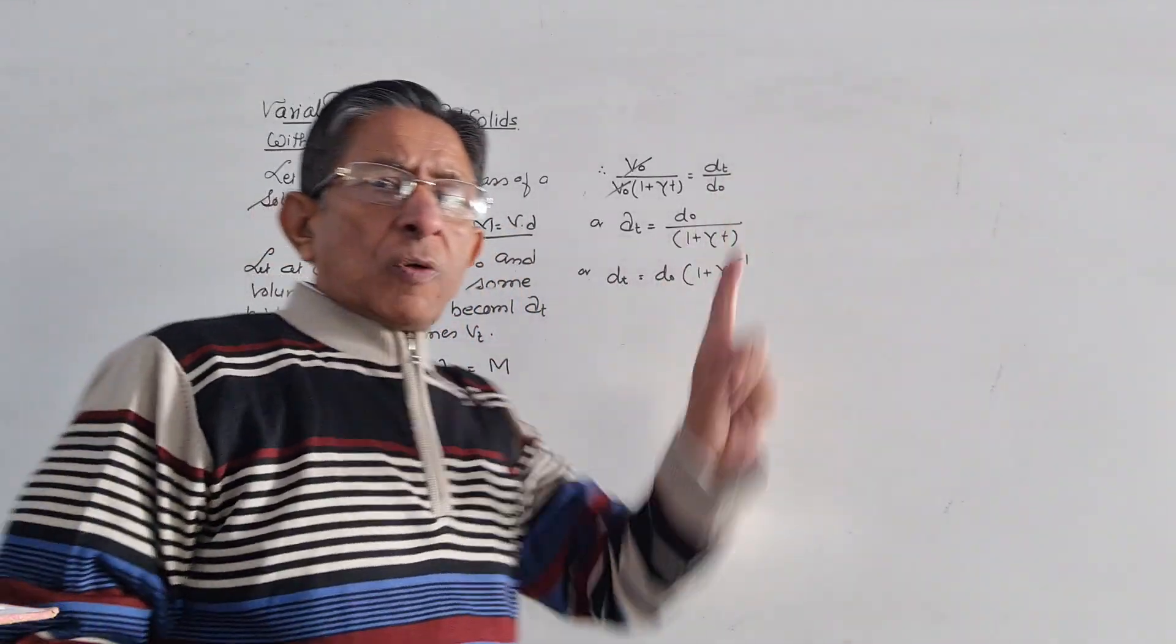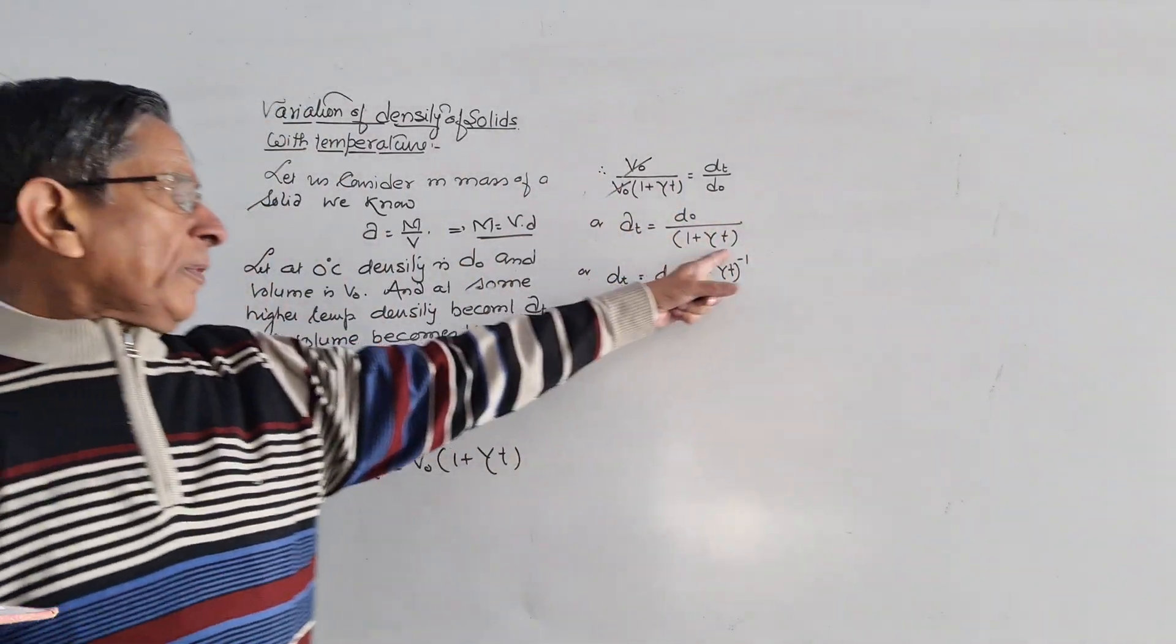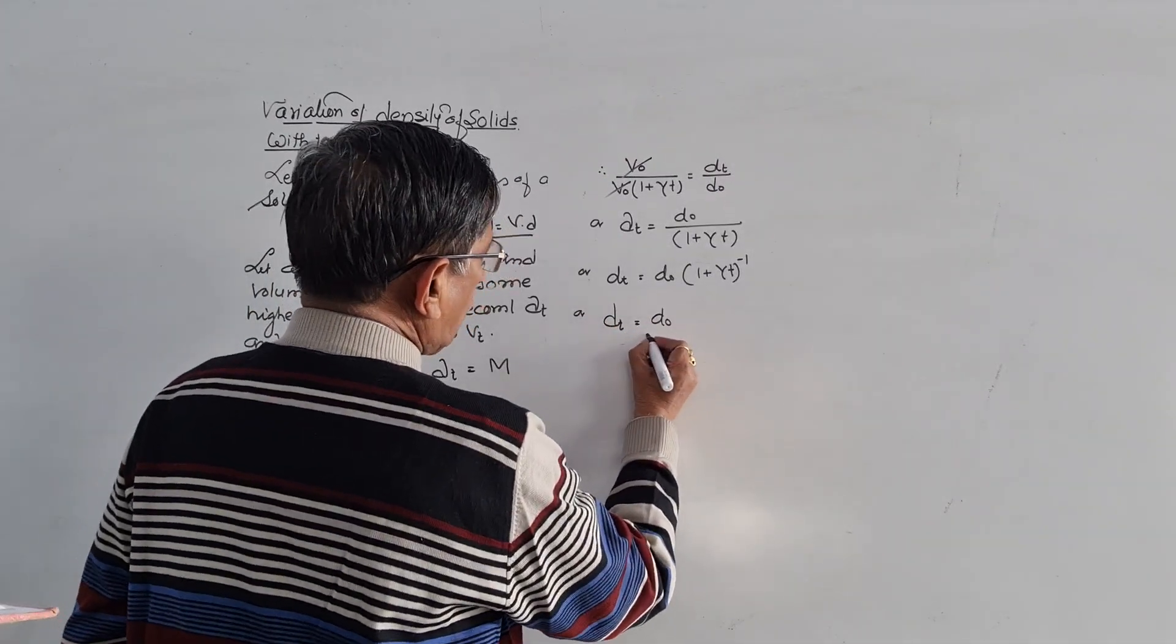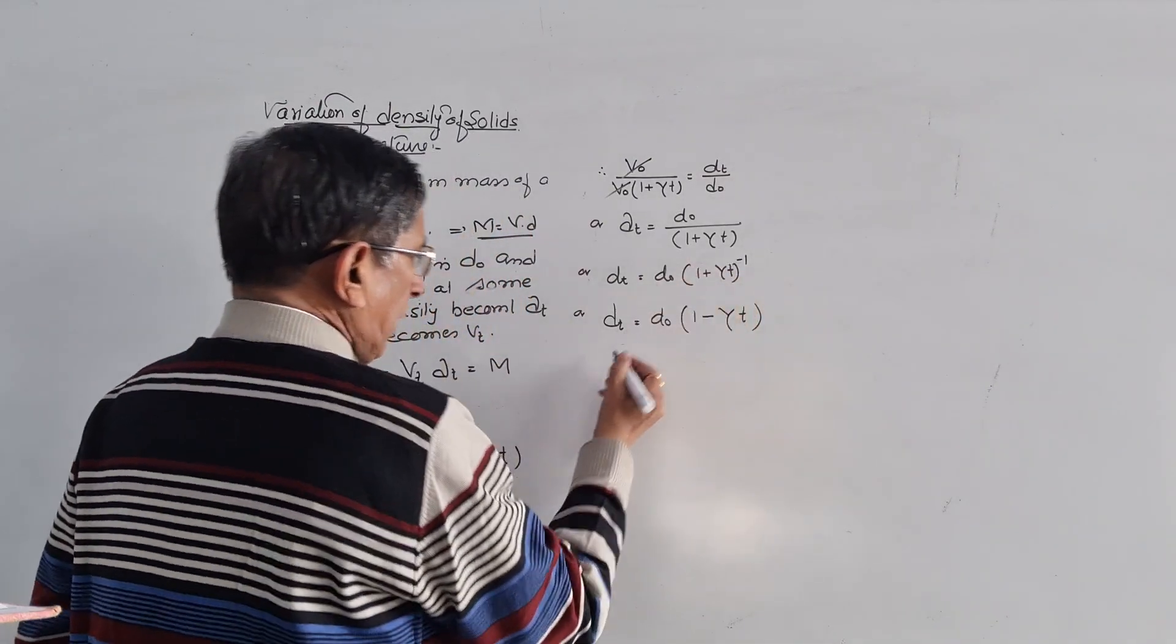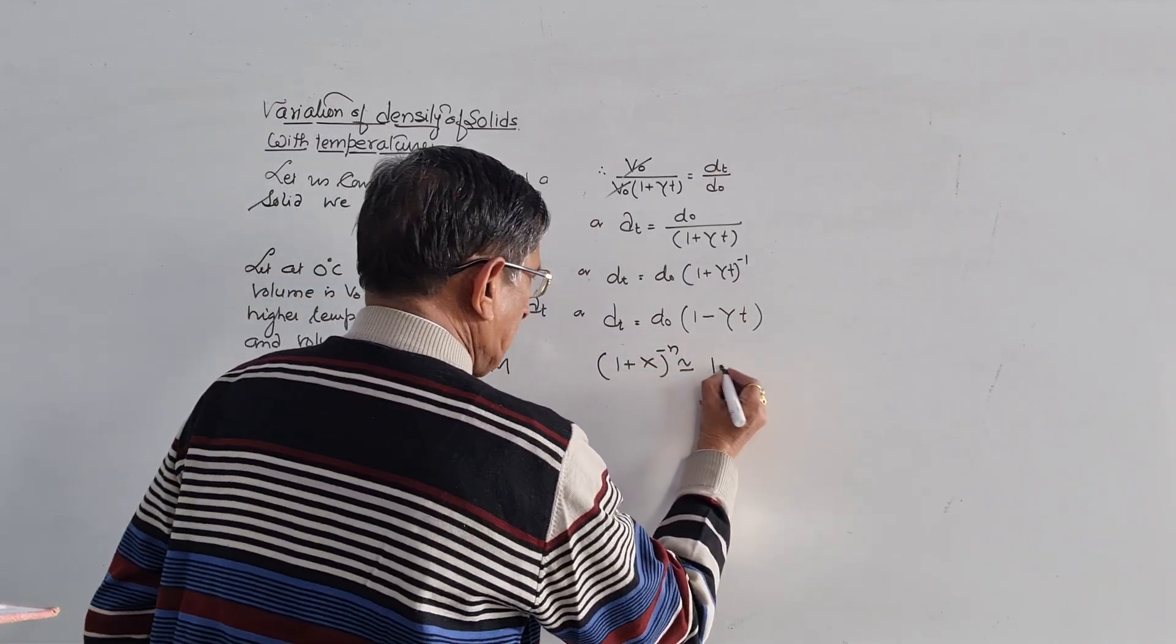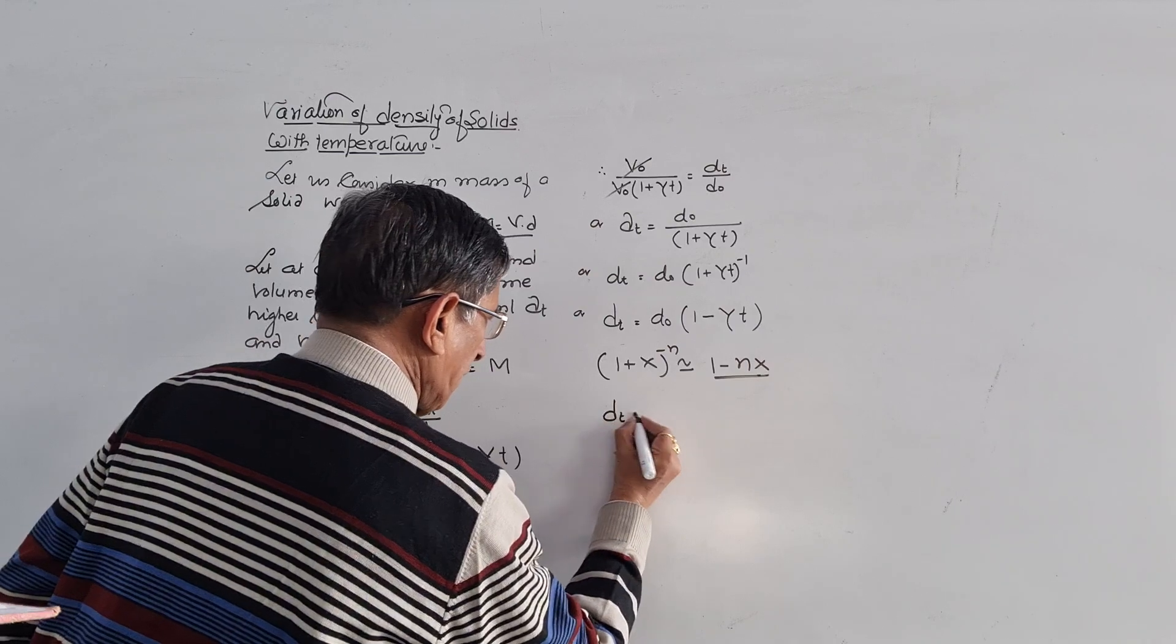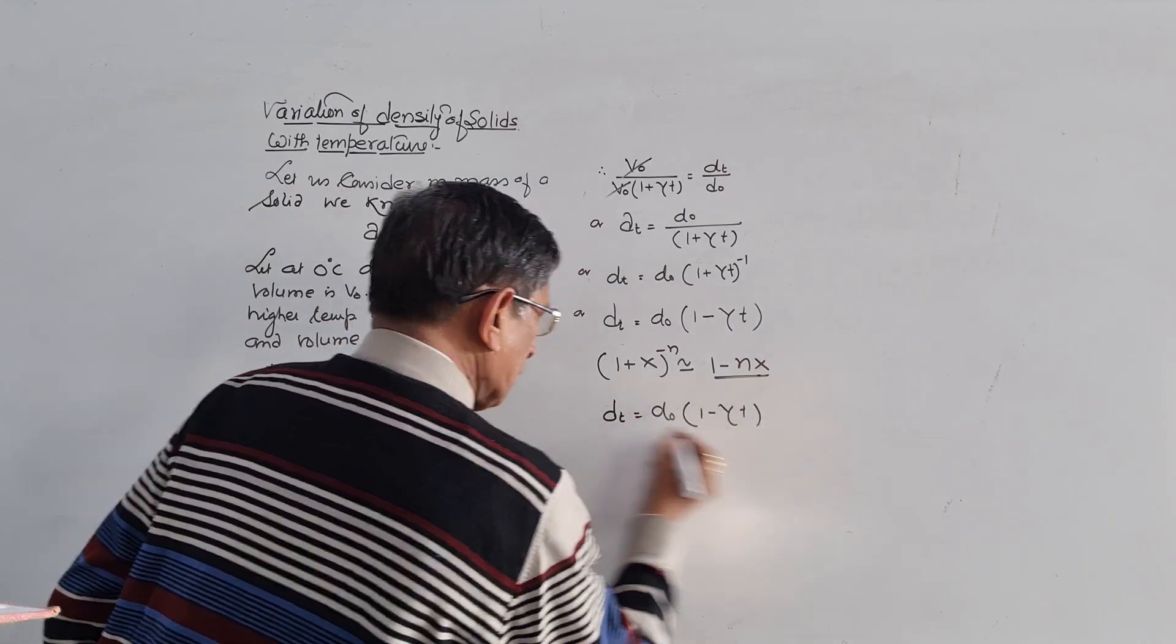So if you open it up to the power minus 1, are you following? Using the binomial expansion, (1 + x) to the power minus n is approximately equal to 1 minus nx. This is the formula you apply. So what is the relation? Dt is equal to D0(1 - γt).